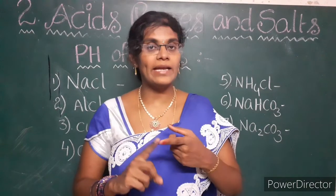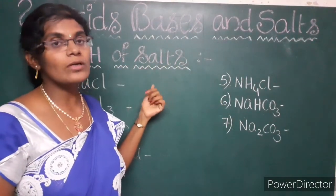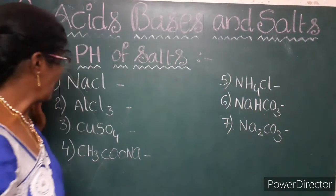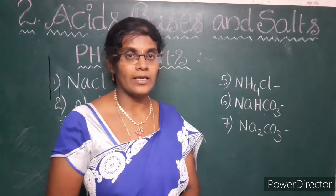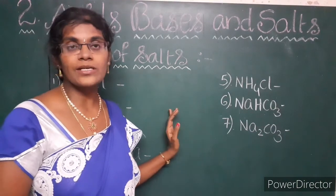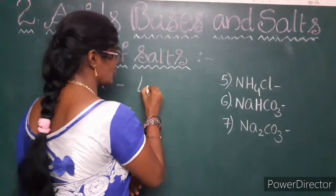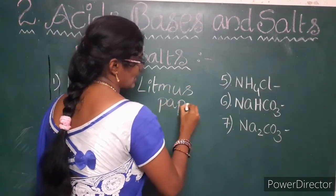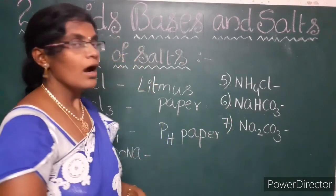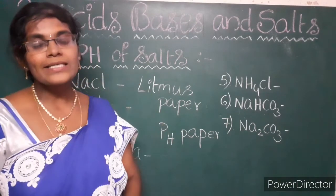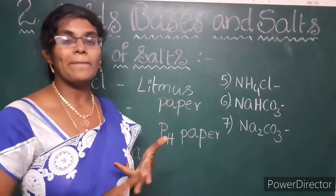By using the given salts, we have identified three families. Now, coming to one more topic: the pH of salts. To find the pH of salts, collect some salt samples like sodium chloride, aluminium chloride, copper sulphate, sodium acetate, ammonium chloride, sodium hydrogen carbonate and sodium carbonate. Dissolve the salts in distilled water separately. Check the action of these solutions with litmus paper and find the pH using pH paper. Also identify the acids and bases used to form these salts, and classify them into acidic, basic and neutral.